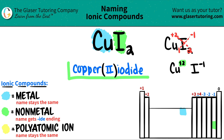So CuI₂ is copper(II) iodide. And that's it! Hopefully this helped. If you want, click the like button and tell me in the comments how you're doing — I'd love to talk to you guys. Good luck on those future tests and quizzes.